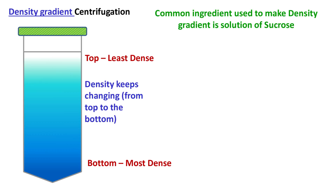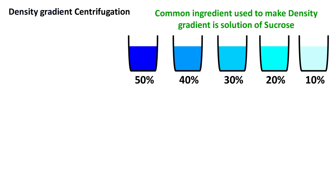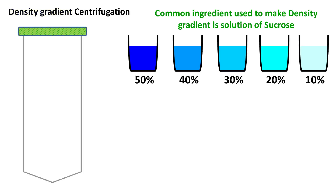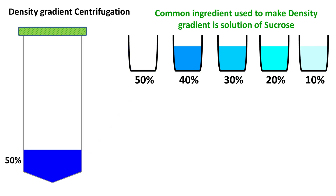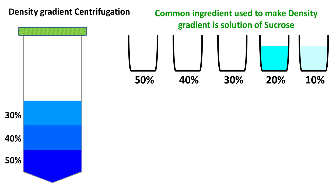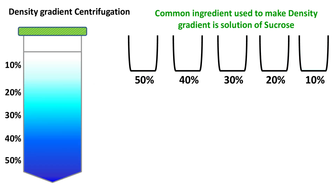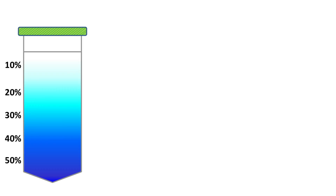One of the most common ingredients used for making a density gradient is a solution of sucrose. The gradient is prepared in a stepwise manner. For this, solutions of sucrose with different concentrations are prepared. The most concentrated one is first layered at the bottom of the tube, followed by stepwise layering with decreasing concentrations of sucrose. The topmost layer is the least concentrated while the bottom layer is the most concentrated.